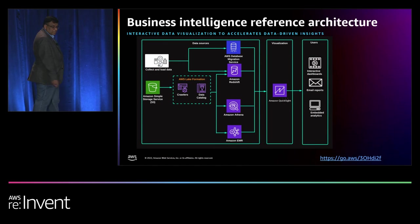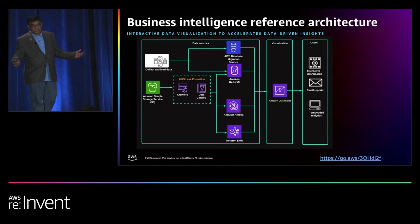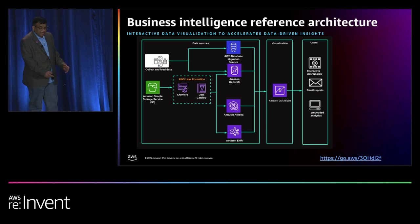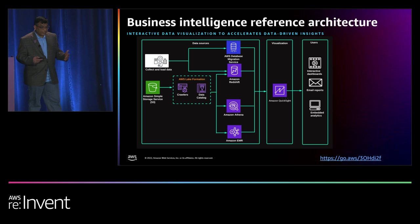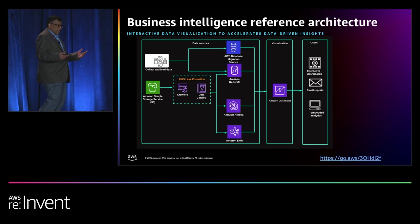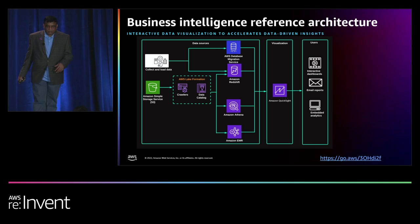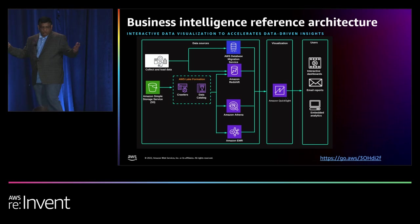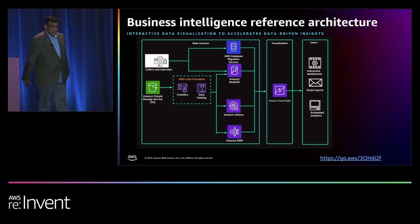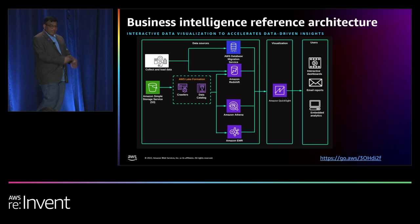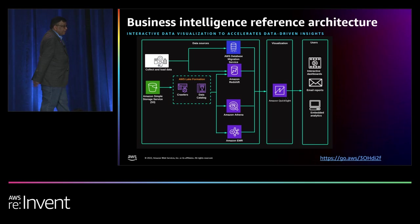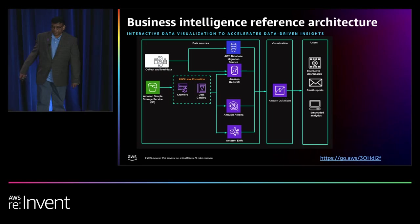Business intelligence reference architecture: you can use this for your data visualization use cases. Data sources can be a data lake, data warehouse, or databases — or any non-traditional databases like Oracle, Microsoft SQL, MySQL, Snowflake, and many more. Amazon QuickSight can be used for multiple use cases like interactive dashboards for business users, generating email reports on a regular basis, and you can also build embedded dashboards for internal and external websites.